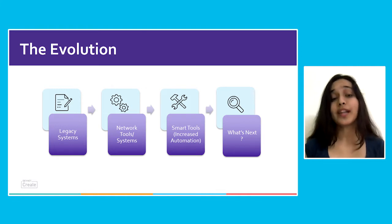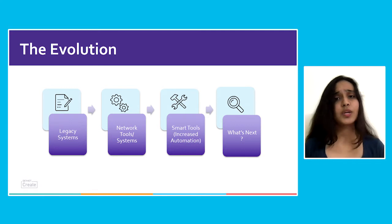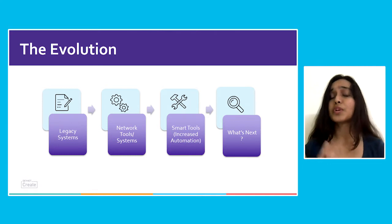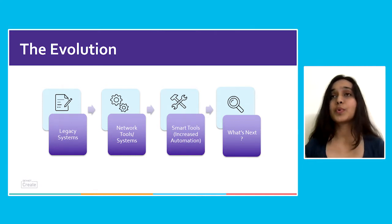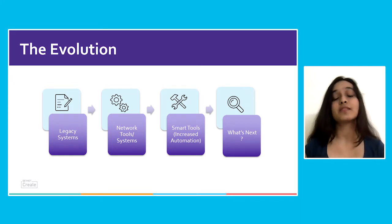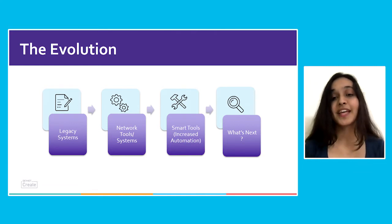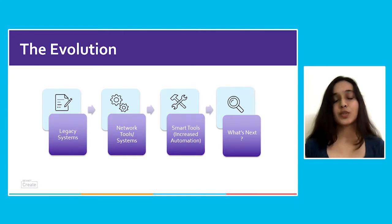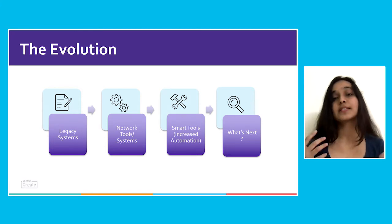Now, the question comes: what next? The new developing technologies, or you can say the cognitive technologies like artificial intelligence, machine learning, and IoT, are proven to be most important because they make products and services smarter and hence more valuable. They also give you the capacity to analyze the network and make decisions accordingly to keep the network stable and better.